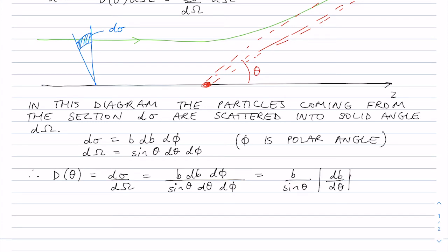So this is an expression for the differential cross-section. And in this course, we're always going to assume that the scattering potential is rotationally symmetric around the z-axis. And so the phi will not change for the particle during the scattering process.